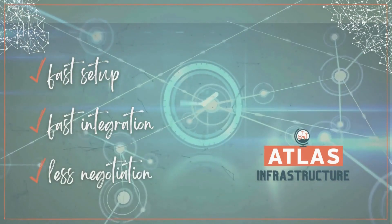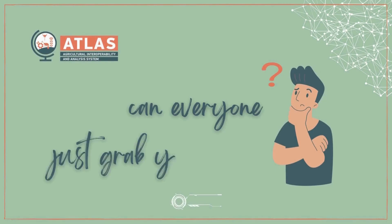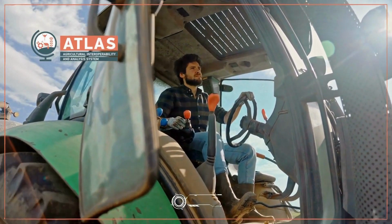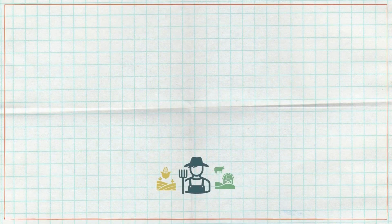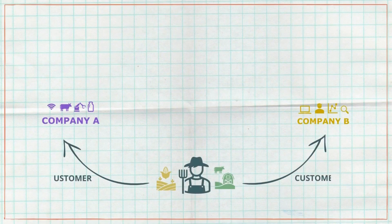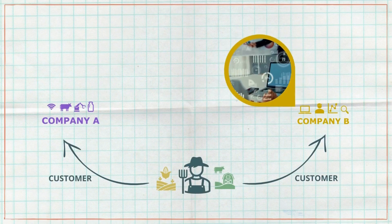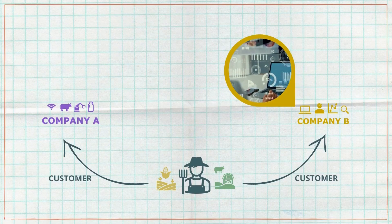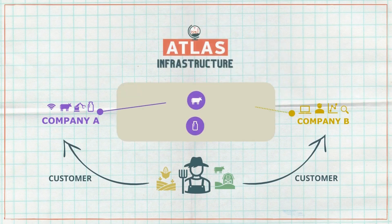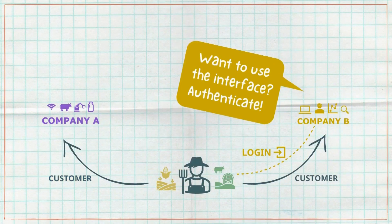Can everyone just grab your data? Yes and no — the farmer is in the driver's seat. For example, imagine a farmer who wants to connect data from two systems. You provide an overall livestock dashboard with the option to also see daily KPIs from the milking system. You simply implement the milking system's ATLAS service to get that data for your dashboard. If the farmer wants to use this, while logged into your tool, they trigger the built-in ATLAS authentication of your interface.